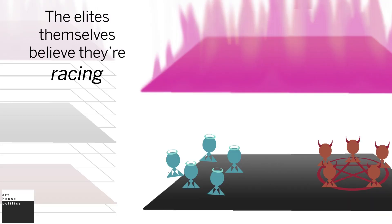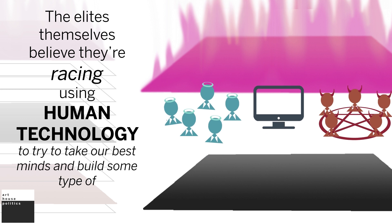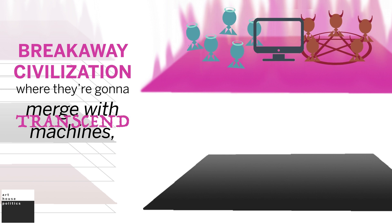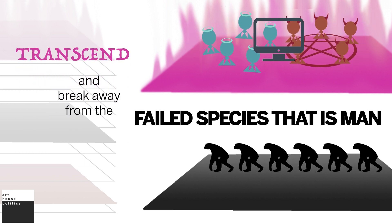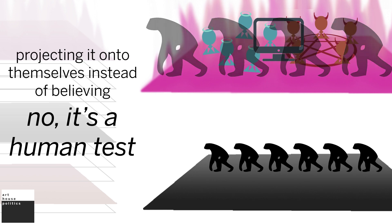The elites themselves believe they're racing using human technology to try to take our best minds and build some type of breakaway civilization where they're going to merge with machines, transcend and break away from the failed species that is man, which is kind of like a false transmission because they're thinking what they are is ugly and bad, projecting it onto themselves instead of believing no, it's a human test about building us up.